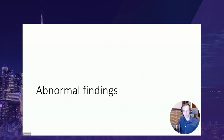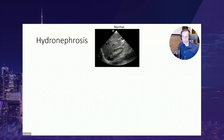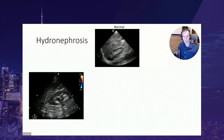Moving on to abnormal findings: the first thing to rule out in a patient with anuria, reduced urinary output, or kidney failure of unknown cause is urinary obstruction. Even if a Foley catheter is inserted, obstruction may be on the upper part of the urinary system. On screen you can see a normal kidney with a bright, ecogenic renal sinus and no collecting structures visible. As hydronephrosis develops, the collecting structures become dilated — this shows mild hydronephrosis and then moderate hydronephrosis with major calyces dilated.